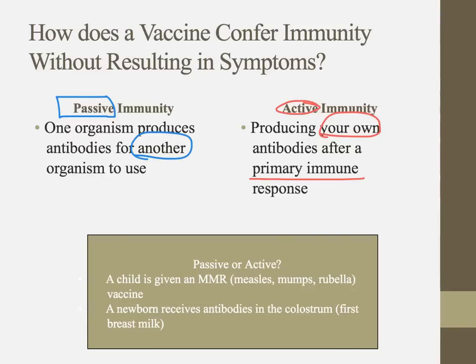Looking at examples: a newborn receiving antibodies in the colostrum — that first breast milk — is getting antibodies from another organism, so that's passive immunity. A child given an MMR (measles, mumps, and rubella) vaccine is getting something that elicits their own primary immune response so they make their own antibodies. Vaccines are a way of getting active immunity — they don't give us antibodies, they give us the ability to produce them.